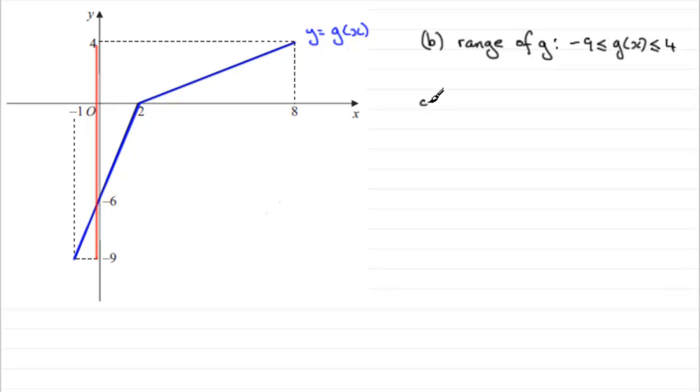So for part c we've got to work out g of g of 2. Now although it's presented like this I always like to think of putting another bracket in here. It's up to you but I think it's better like that.